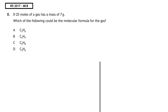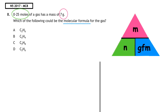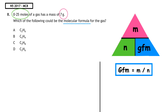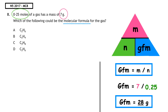This question is from the National 5 2017 past paper, multiple choice Q8. 0.25 moles of a gas has a mass of 7 grams. Which of the following could be the molecular formula for the gas? We have been given the number of moles and a mass, so we calculate the gram formula mass: GFM = m ÷ n = 7 ÷ 0.25 = 28 grams.